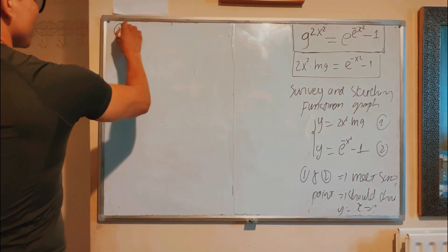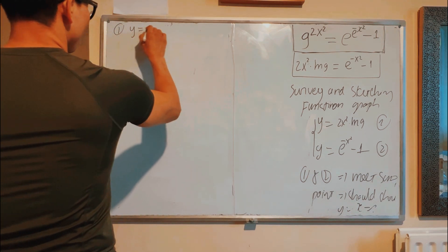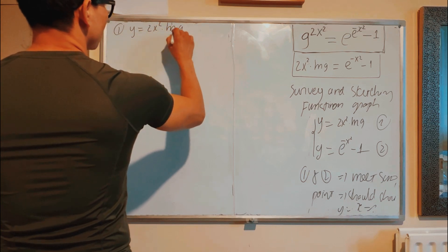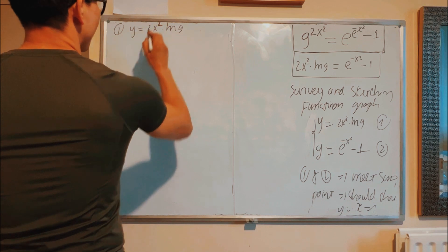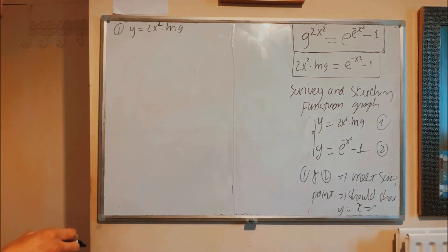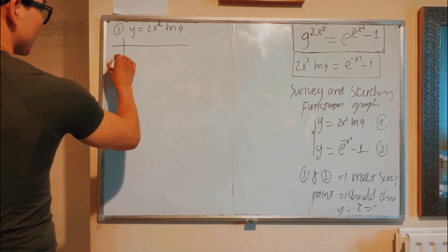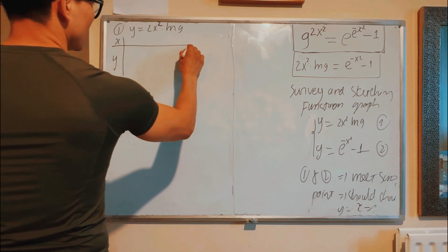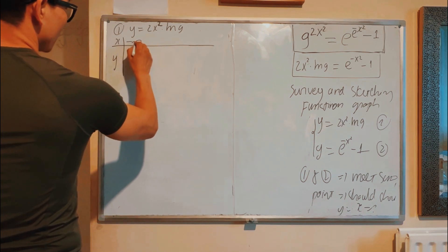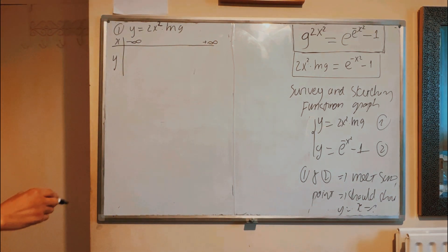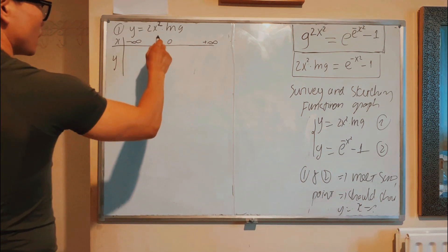Okay, next step I do survey and sketching function graph for 2x² ln 9. I will do the graph later. When you survey and sketch function graphs, you have to do a table. The table shows you the function with respect to X. You have to say that X will go from negative infinity to positive infinity, and then you pick a point at X equals 0.